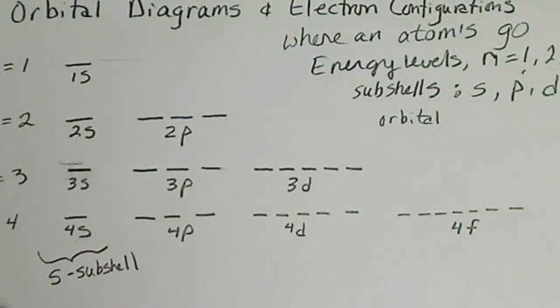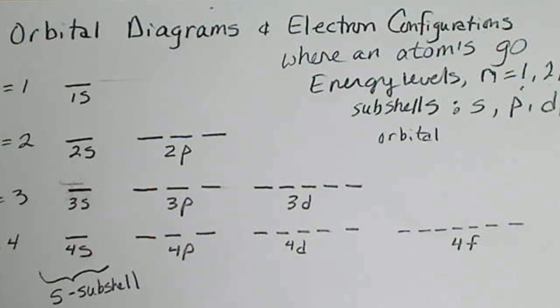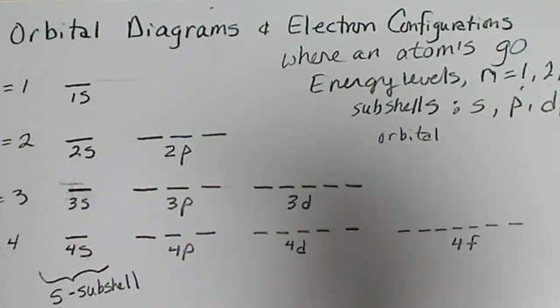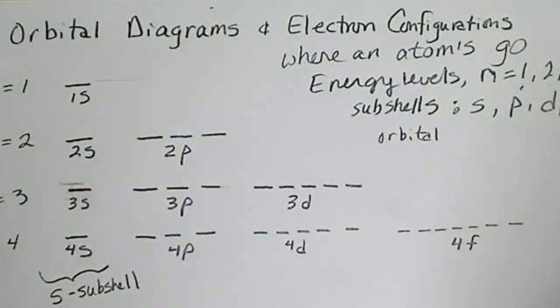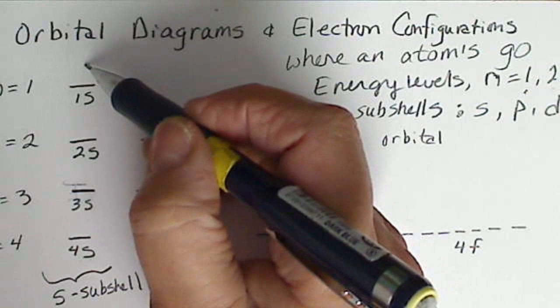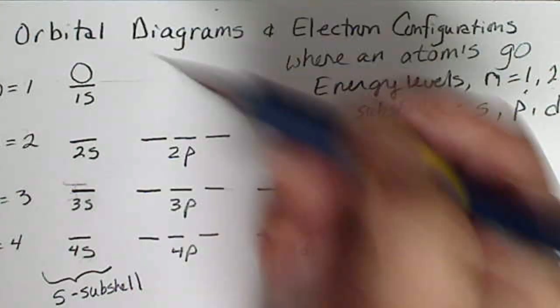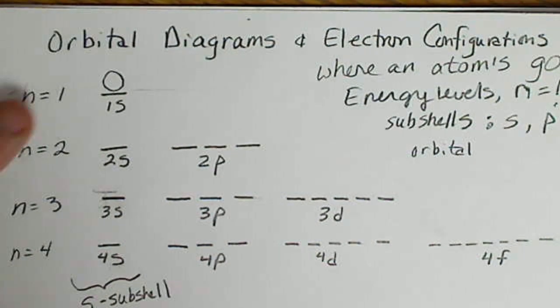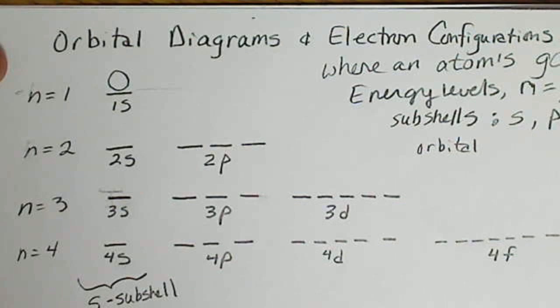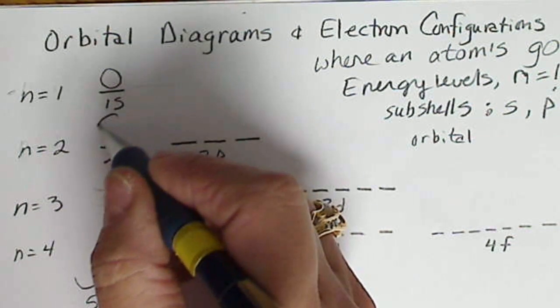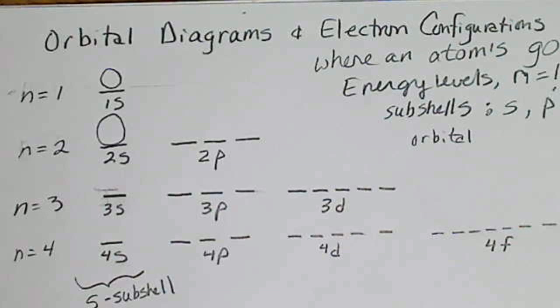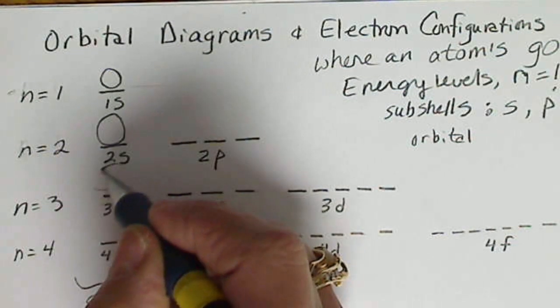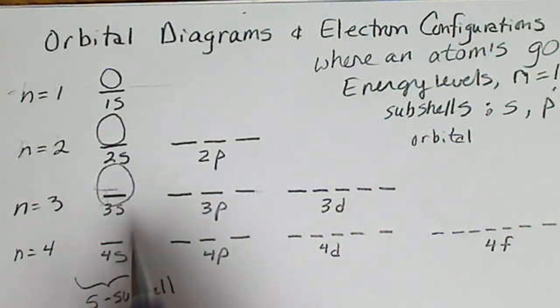Any time we have the letter S, we have a spherically shaped orbital, and remember an orbital is really just a probability density of finding an electron. So a 1s orbital would be a spherically shaped region. 2s would just be larger. It would still have that spherical shape, and a 3s orbital would be even larger.